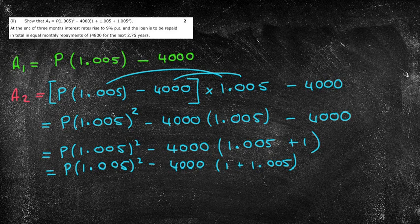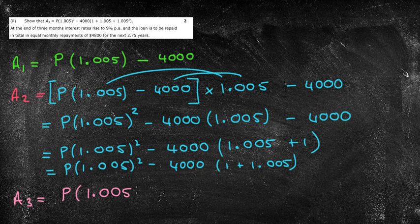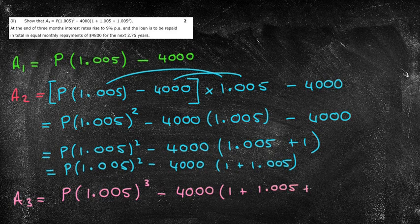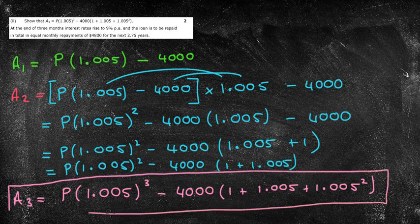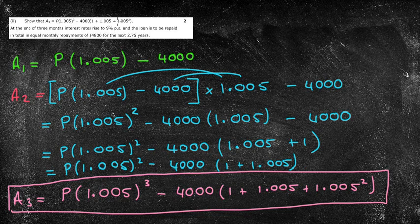Now we haven't answered the question yet because the question has asked us to find an expression for A3. So now what I can do is start to create my expression for A3. That was for A2, that was the power of 2, so A3 to the power of 3. Then we've got -4000(1 + 1.005 + 1.005²). Obviously if it would be 4th, then there would be another 1 there going through. So you could come for a term of A to the power of N if you wish, but they haven't asked us to do that. This is exactly what they've asked us to do.